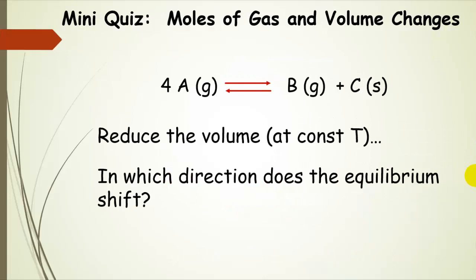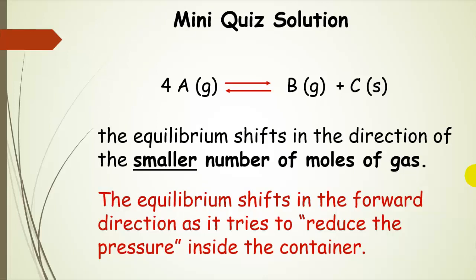Here's a mini quiz. For this gaseous reaction: A(g) goes to B(g) and C(s), we are going to reduce the volume at constant temperature. Which direction does the equilibrium shift? The equilibrium is going to shift in the direction of the smaller number of moles of gas. There are four moles of gas on the reactant side and one mole of gas on the product side — you have to pay attention to the phase labels, since C is a solid and doesn't count. So the equilibrium shifts toward the products, the smaller number of moles of gas, trying to reduce the pressure inside the container when we reduced the volume.